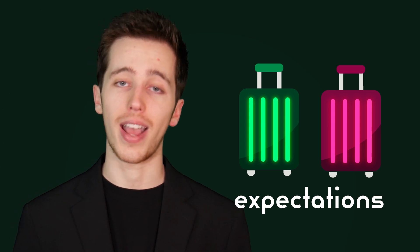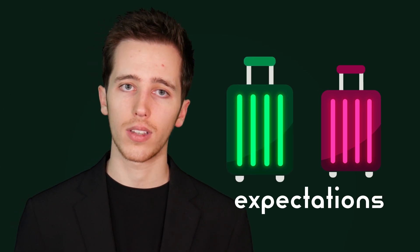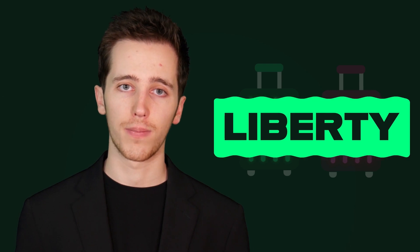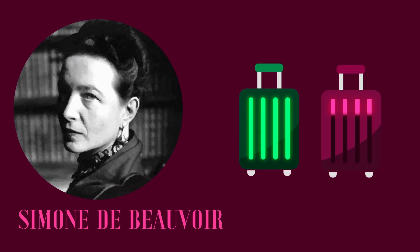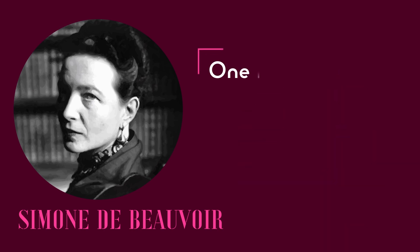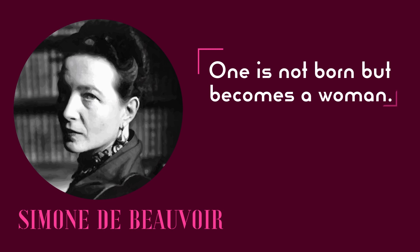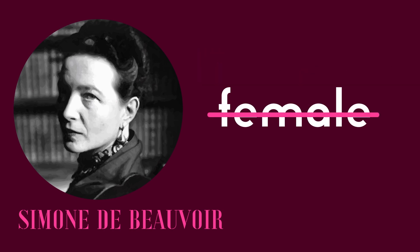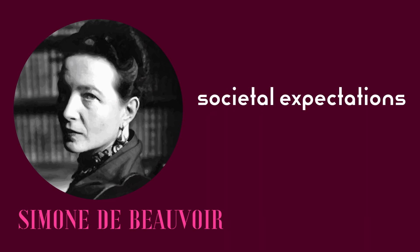So why should we separate the concepts of sex and gender? Because if we can separate society's expectations of how men and women should act from biological sex, then we can achieve liberty for men and women both. In the 1940s, feminist philosopher Simone de Beauvoir separated sex and gender. Her famous quote — "one is not born but becomes a woman" — reflects this. Beauvoir does not mean that female is socially constructed, but rather that the societal expectations of how a woman should act are constructed.